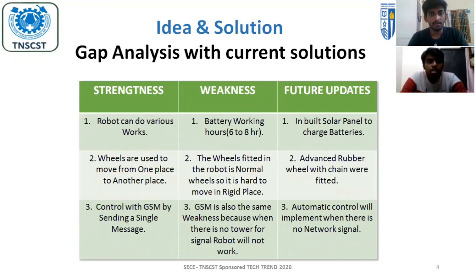Idea and solution — SWOT analysis with current solution. Strength: the robot can do various types of work. Weakness: battery working time is only 6 to 8 hours.